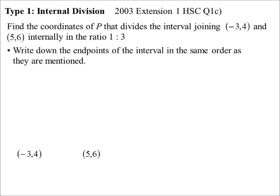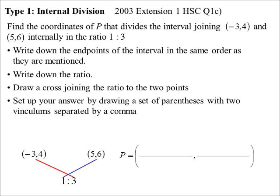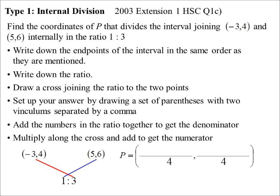I'll write down the end points of the interval in the same order that they mentioned. So, minus three, four, five, six. Then, underneath it, I'll write down the ratio, again, in the same order. One to three. And I'll just draw myself across. And I, basically, I multiply along the crosses. So, to get it up, I set it up. It's going to be a coordinate. I draw in vinculums. The bottom of the fraction, I add the two numbers in the ratio together. So, one and three makes four. So, I know all up there's four parts, basically. So, that goes on the bottom of the fraction. And then, as I say, to get the x values, I multiply along the crosses.